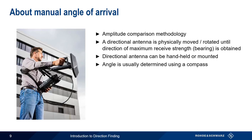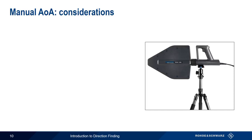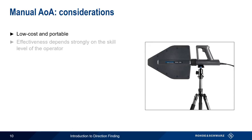The biggest advantage of manual angle of arrival is that it's low cost and portable, especially when done using handheld antennas and portable receivers. Even with a tripod or other mounting device, these types of manual systems are almost always man-portable, and can be quickly deployed in almost any location with minimal setup time. And depending on the type and nature of the target signal, manual angle of arrival based approaches can often yield acceptable results.